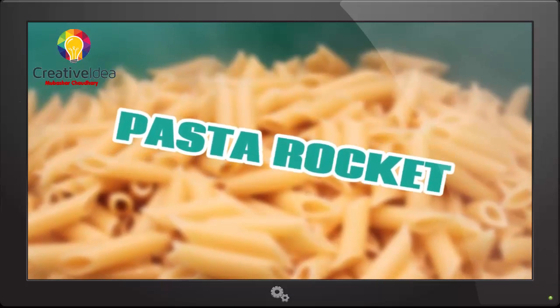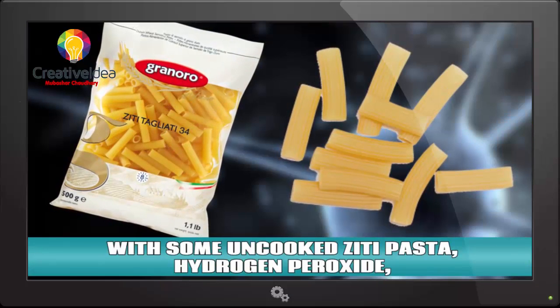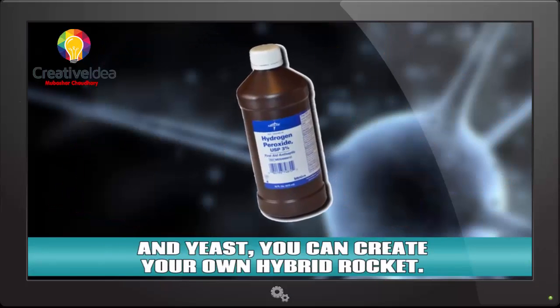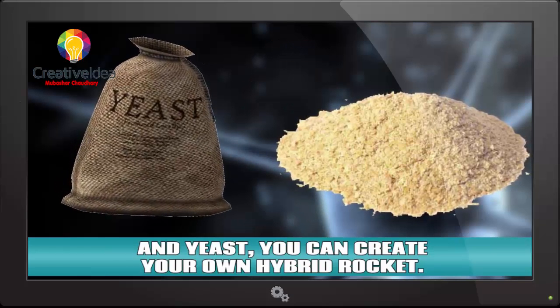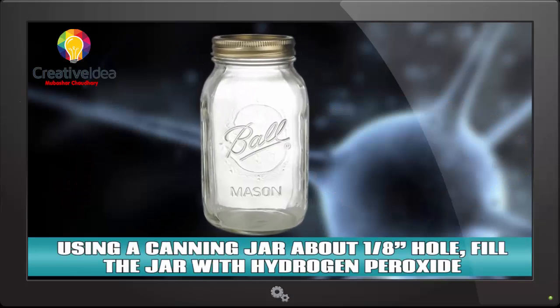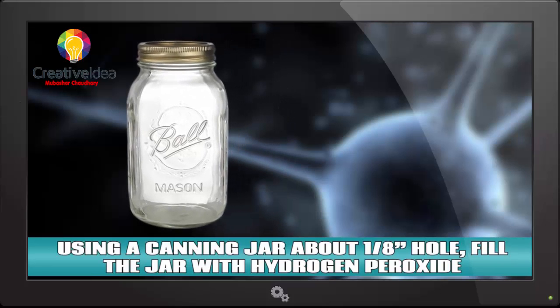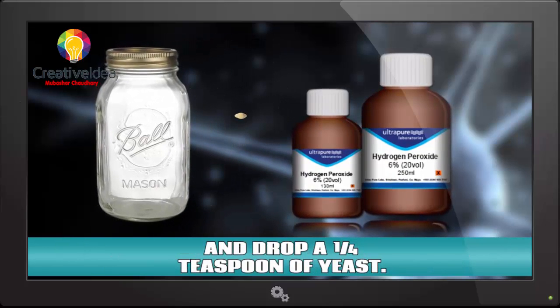Pasta rocket. With some uncooked ziti pasta, hydrogen peroxide, and yeast, you can create your own hybrid rocket. Using a canning jar with about an eighth of an inch hole, fill the jar with hydrogen peroxide and drop a quarter teaspoon of yeast.